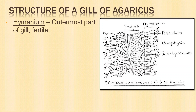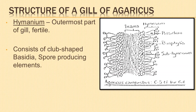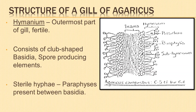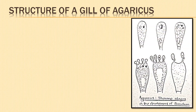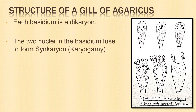The hymenium or thecium is the outermost layer of the gill and is fertile. It consists of a closely packed palisade-like layer of club-shaped cells called basidia. The basidia are aseptate and spore-producing elements. Sterile hyphae called paraphyses or cystidia are present in between the basidia. Each basidium is a dikaryon; as the basidium grows and matures, the two nuclei fuse to form the synkaryon — this is known as karyogamy.